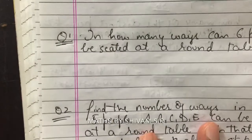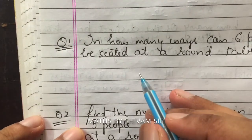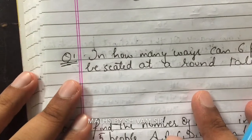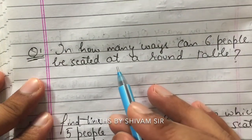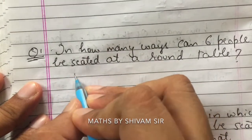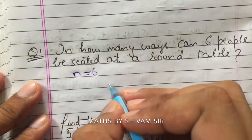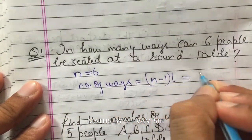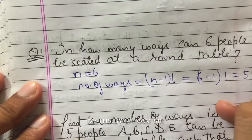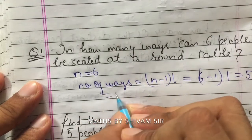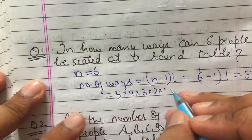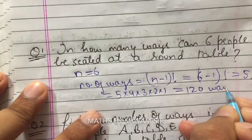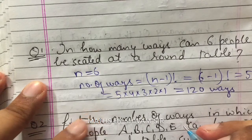Example: In how many ways can 6 people be seated at a round table? Using the circular permutation formula, number of ways = (6−1)! = 5! = 5 × 4 × 3 × 2 × 1 = 120.